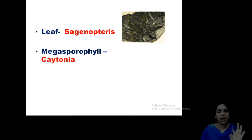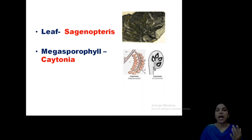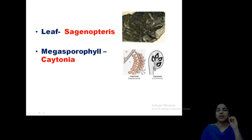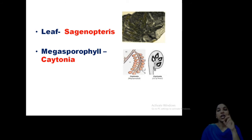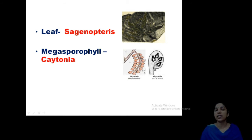Chitonia is the female reproductive part — the megasporophyll. This is the well-studied part of Chitoniaceae. Just look at the structure of Chitonia. You can see some similarity with angiosperms: a fruit-like nature, a closed fruit-like nature, with seeds arranged inside. This leads to the discussion of the evolution of angiosperms, and there is a Chitonian theory to explain that evolution. This is because of its similarity with angiosperms with respect to the megasporophyll or the female reproductive part.